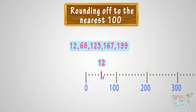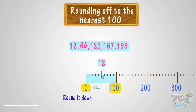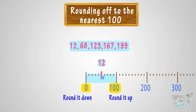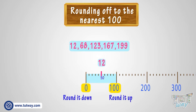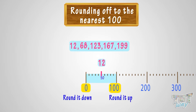Whenever you want to round a number, there are always two options. Either we can round it down to the previous 100 or round it up to the next 100. Think, which option do you think is more apt? Here is a rule to help you. You have a 50 mark midway between the two 100s, just as there was a 5 mark when you round off numbers to the nearest 10.